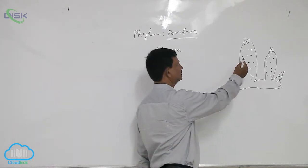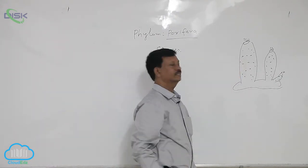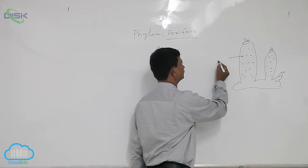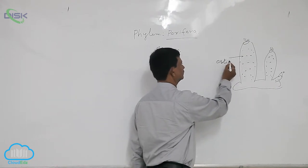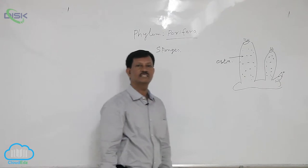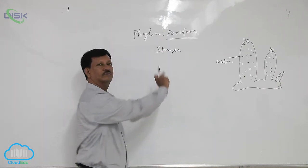There are a large number of pores present on the body, known as Ostia. Due to the presence of this character, the phylum name is referred to as Porifera.